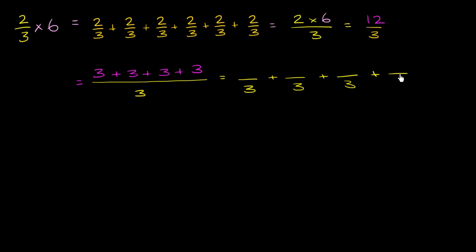This is going to be the same thing as 3/3 plus 3/3 plus 3/3 plus 3/3. And each of these are obviously a whole. Each of these equal 1. That's 1, that's 1, that's 1, and that's 1. So this is going to be equal to 4. So that's one way to conceptualize 2/3 times 6.